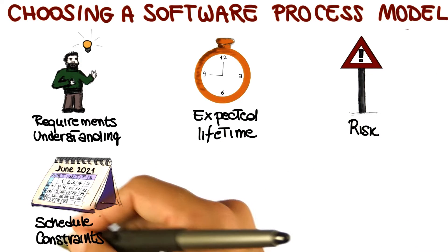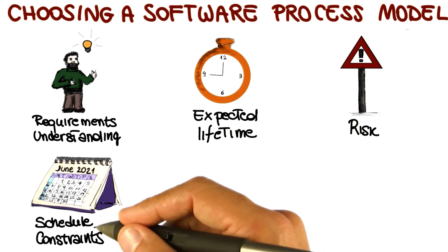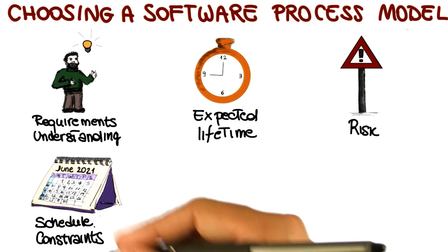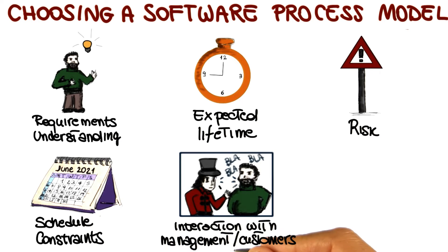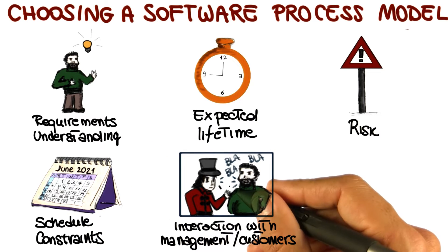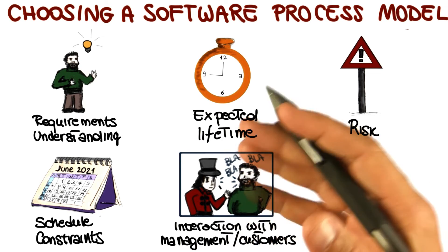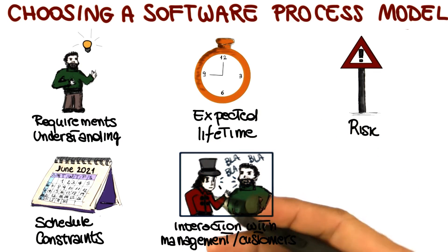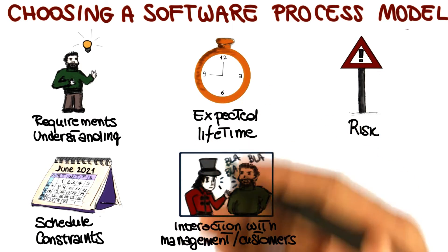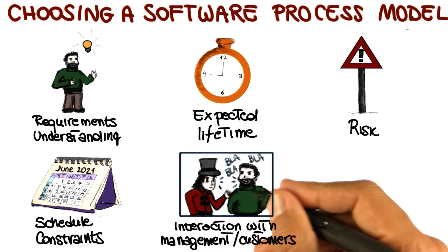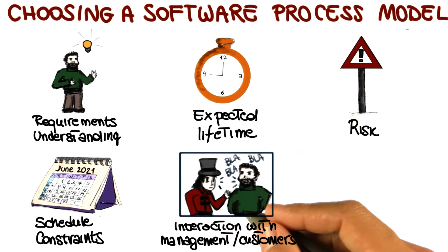It is also very important to know the schedule constraints — how much time and how many resources do we have for this project? What is the expected interaction with the management and the customer? In particular for the latter, there are many processes that rely on the fact that there can be a continuous interaction with the customer. If that interaction is not there, there's no way we are going to be able to use these processes.